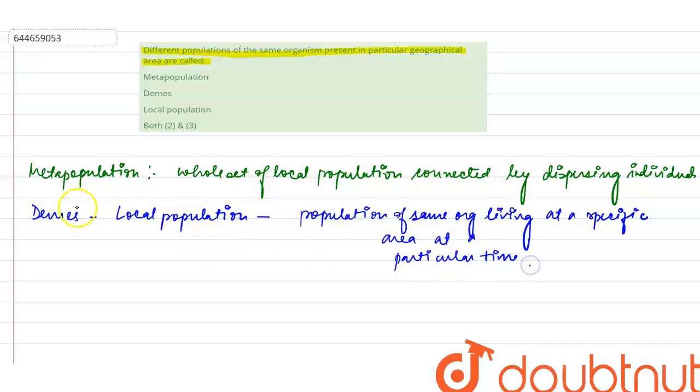So this is our deems or local population. If we see different populations of the same organism present in a particular geographical area, what will it be? It will be our deems or local population. Both the options, so our answer will be both two and three. That is, the fourth option will be our answer.